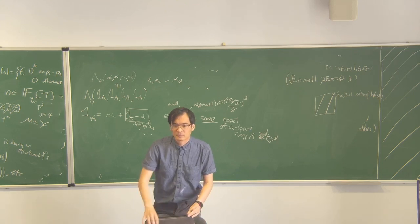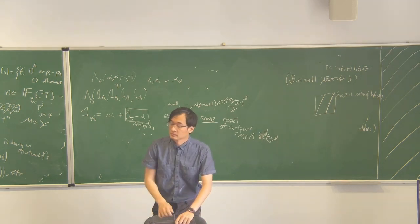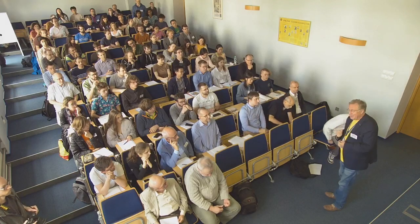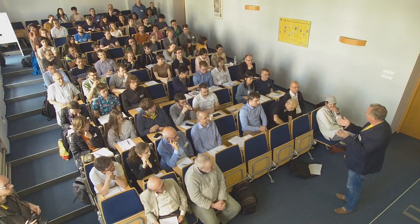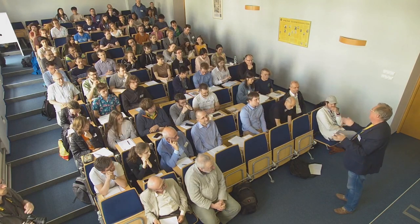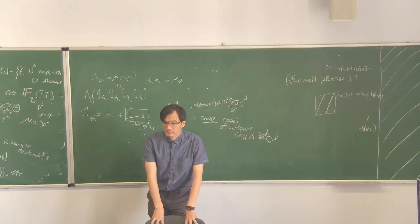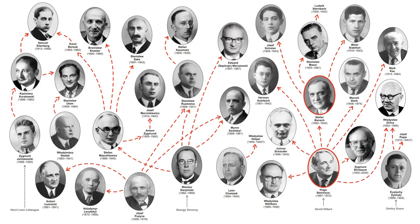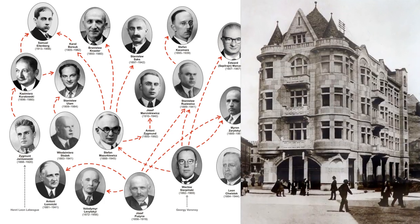Please allow me to take five minutes of your time — I've come with a very important mission. In 1935, the representatives of the Lvov school of mathematics, led by Stefan Banach and Hugo Steinhaus, started to collect problems. They wrote them down in the so-called Scottish Book, because mathematicians gathered in the Scottish Café to discuss these questions.